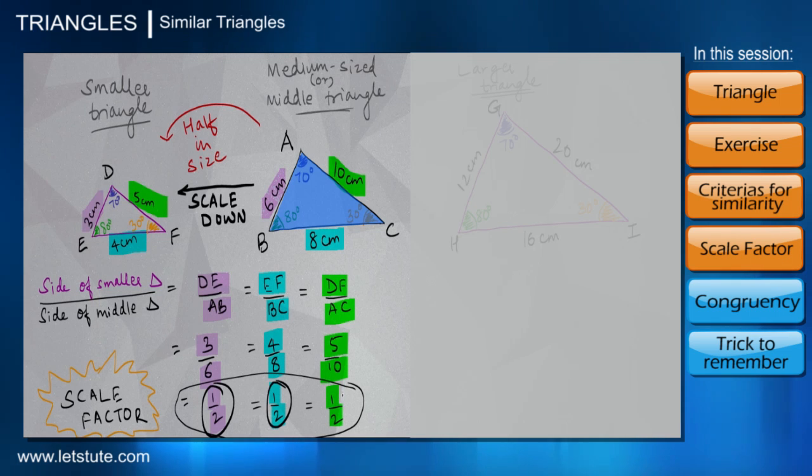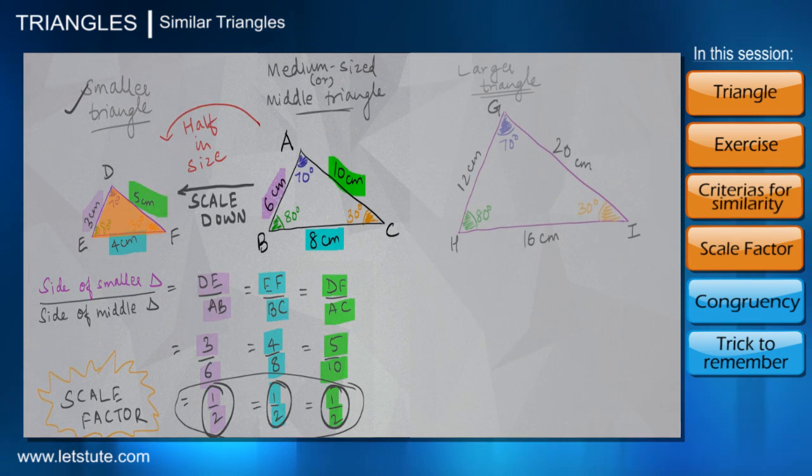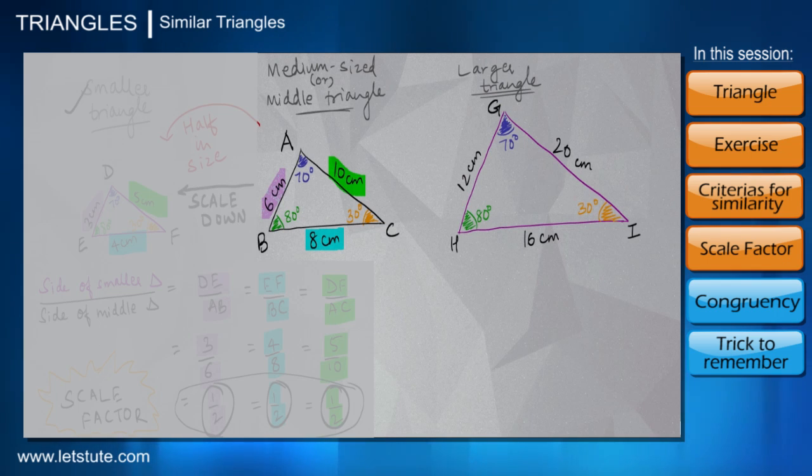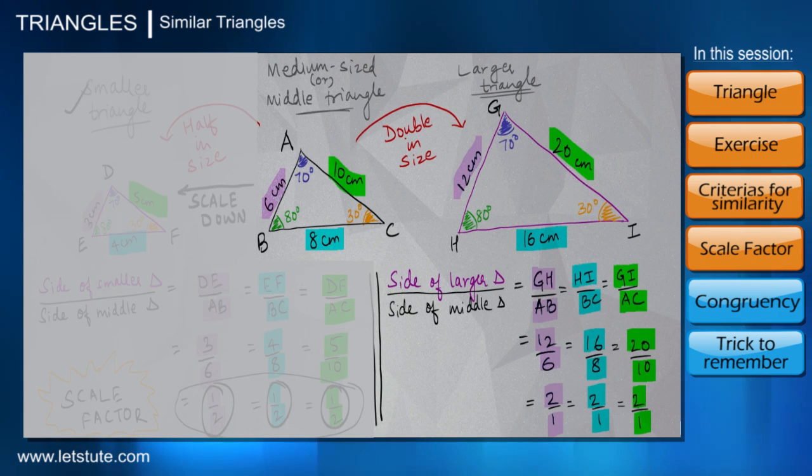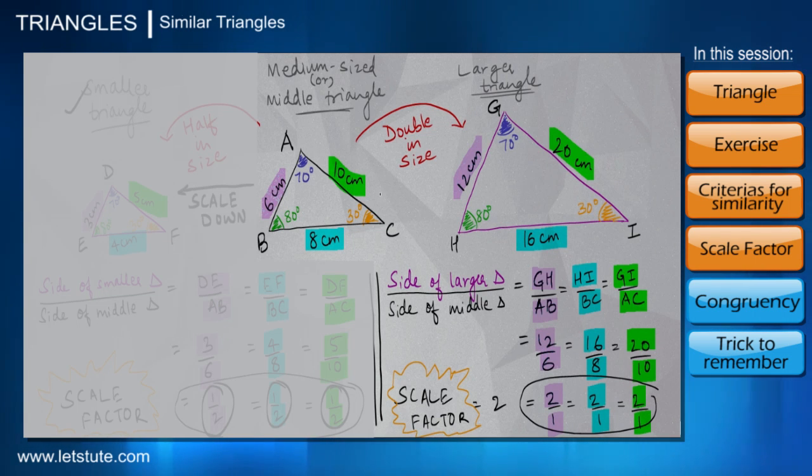As part of geometrical terminologies, we can say in this case we are performing a scale down on triangle ABC by a scale factor of 1 upon 2 to get a smaller triangle DEF. Now if we shift our attention to the larger triangle GHI, quite clearly all of its sides are double in length with respect to the sides of triangle ABC.